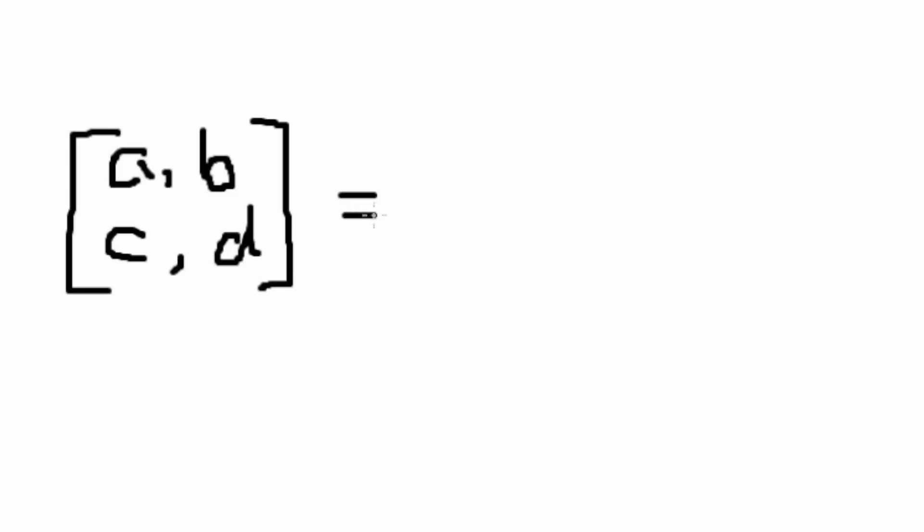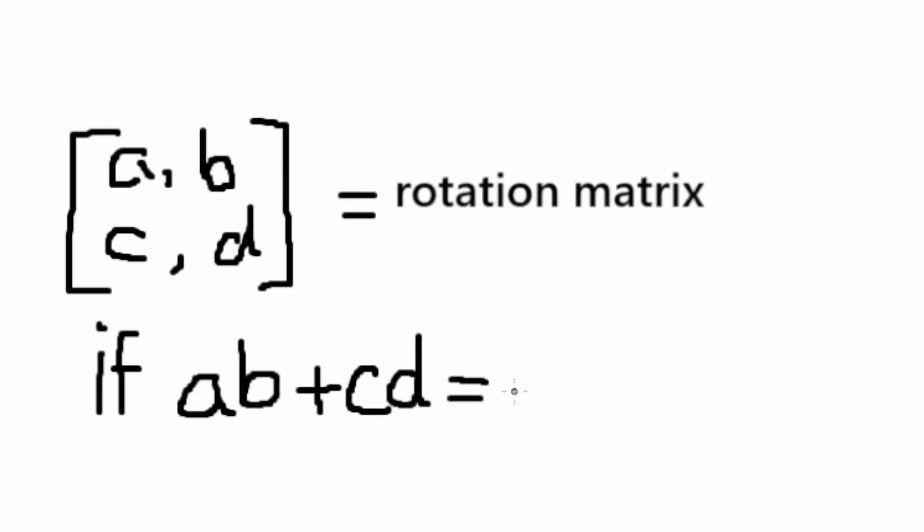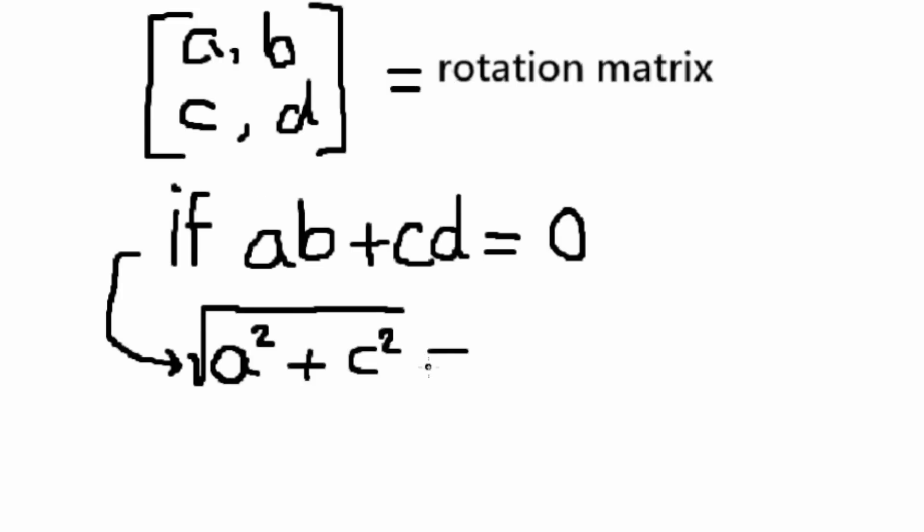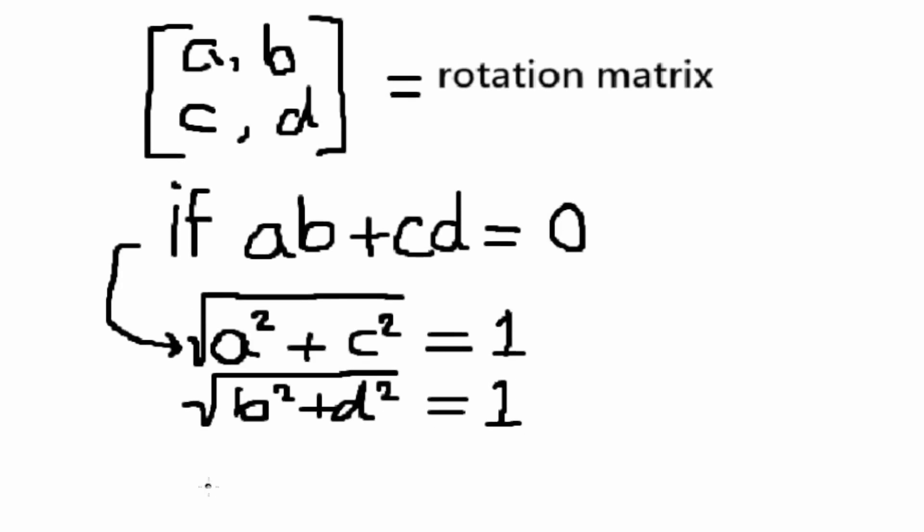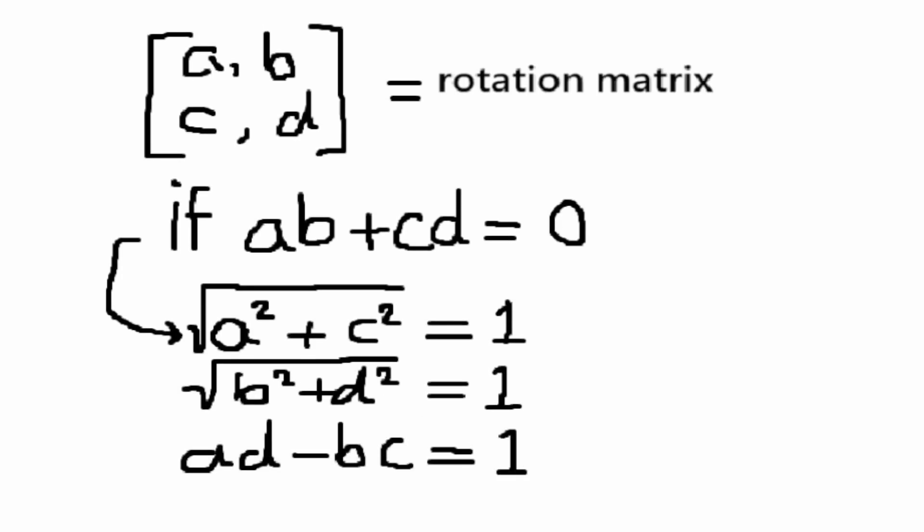Anyhow, a matrix is a rotation matrix if the dot product of the columns are equal to zero, meaning they are orthogonal or perpendicular. The magnitudes of the columns are equal to 1, and the difference between the cross multiplication products is also equal to 1.